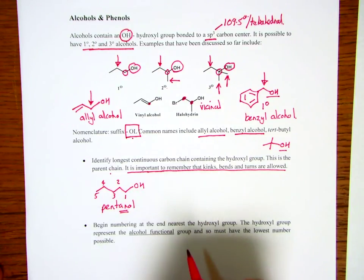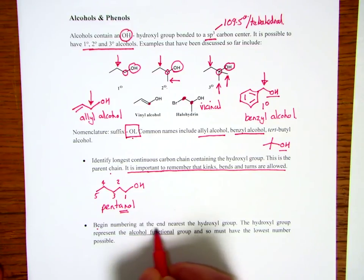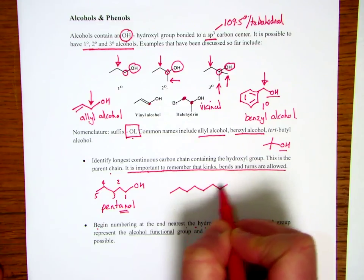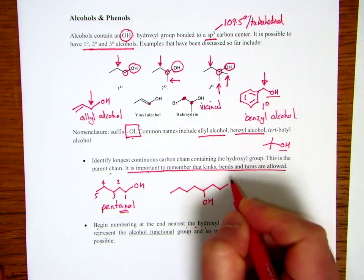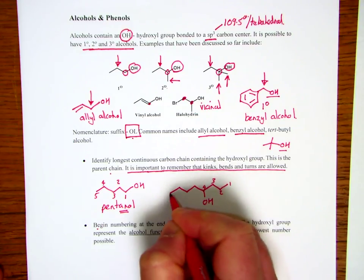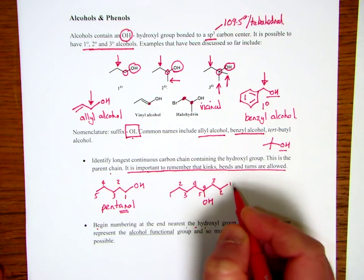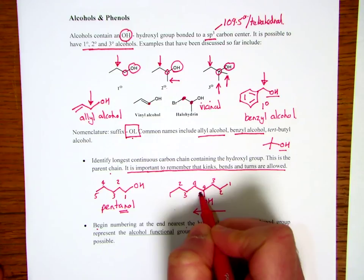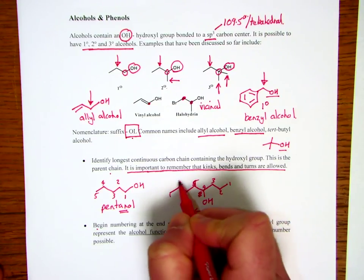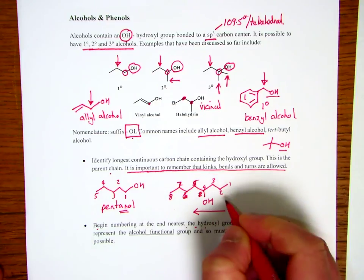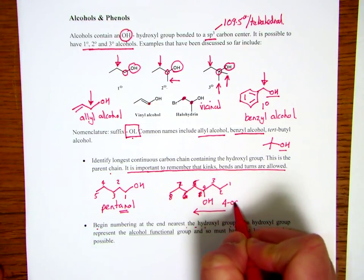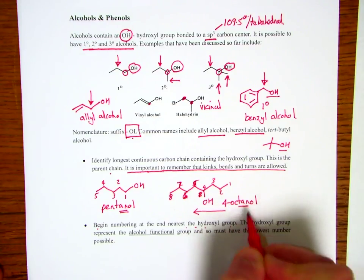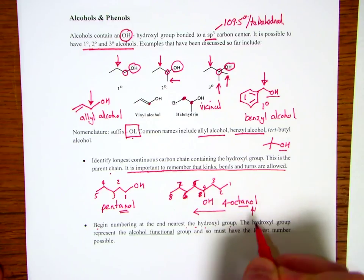Obviously, the hydroxyl group is at the lowest number possible. It says begin numbering at the end nearest the hydroxyl group. Always the lowest number. So we take a look at another example over here. Obviously, in this example, we can either go one, two, three, four or one, two, three, four, five. So we're going to count from right to left in this direction. That will give us the lower number. So this becomes five, this becomes six, this becomes seven, and this becomes eight. And so consequently, now this is 4-octanol. Four is the position of the hydroxyl group. AN tells us it's all single bonds. And again, the OL tells us it's the alcohol.